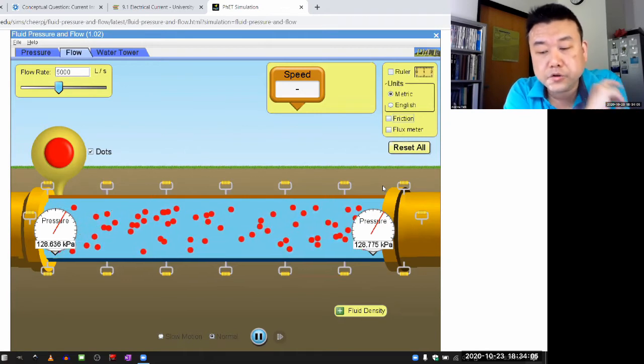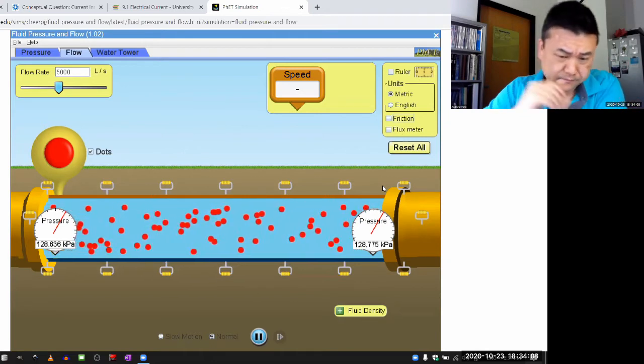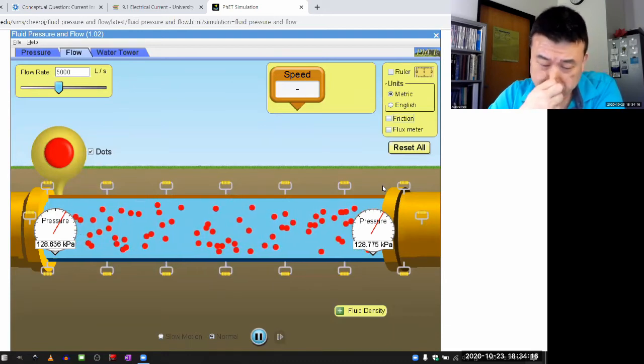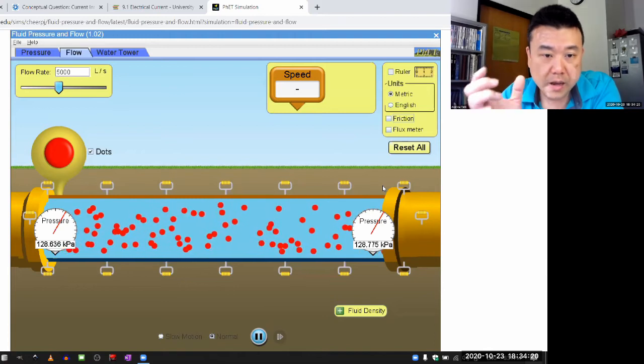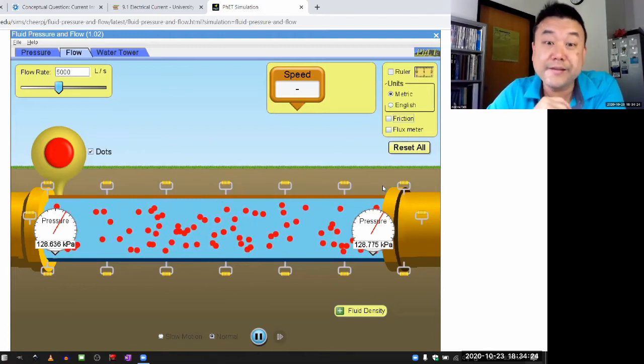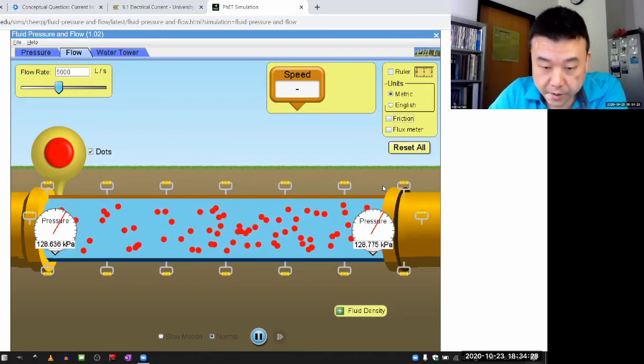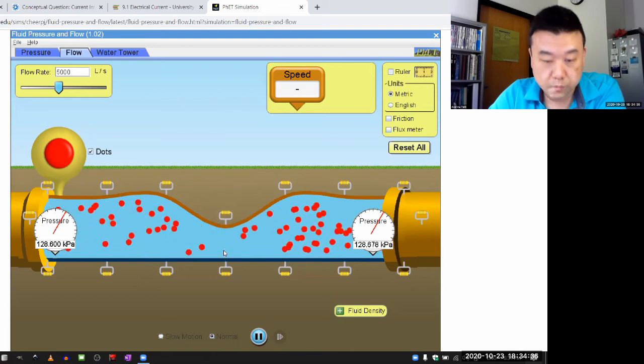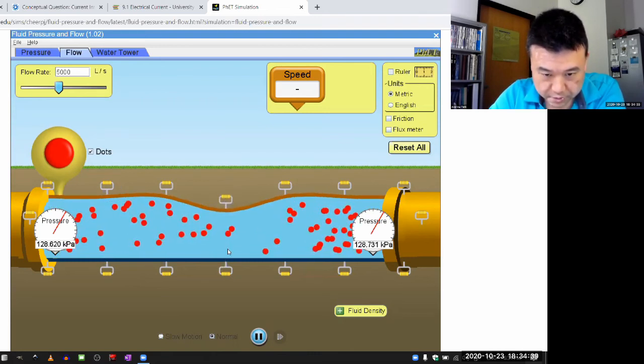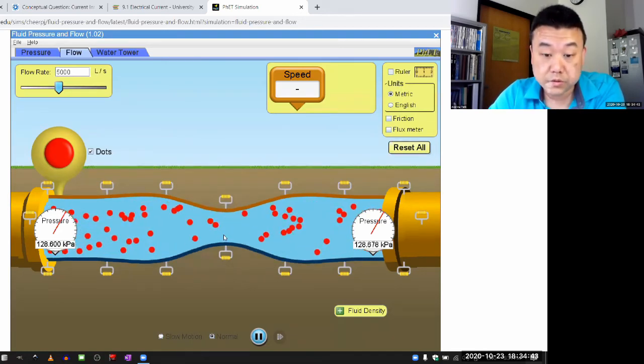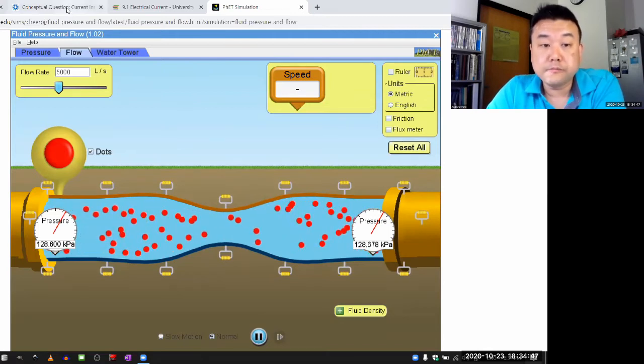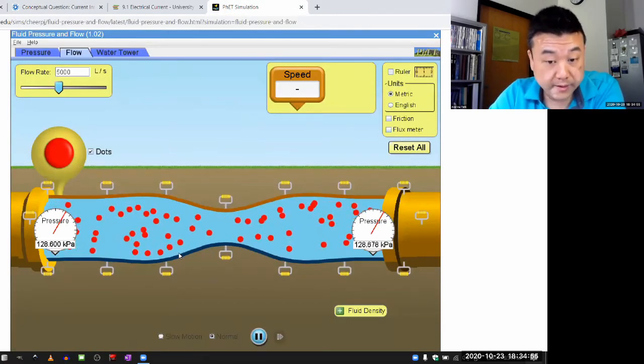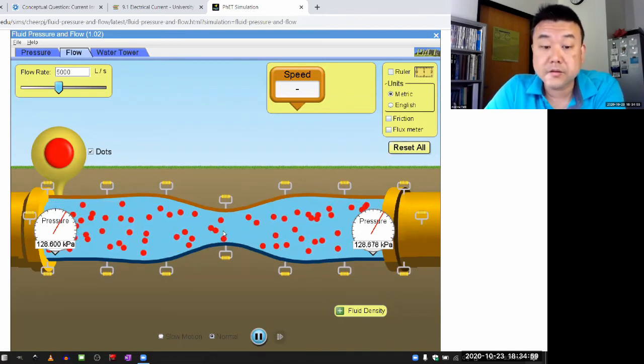What I do want to talk about is how to connect to your intuition about this kind of flow and how different aspects of this change as you change different parameters here. So the main parameter you can change here is the width of the pipe. And you can change it there, here, and that change in the width of the pipe is what would correspond to change in the width of this conductor.